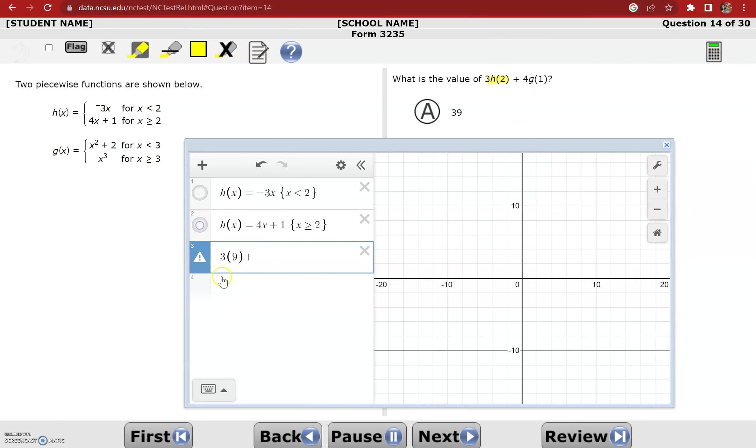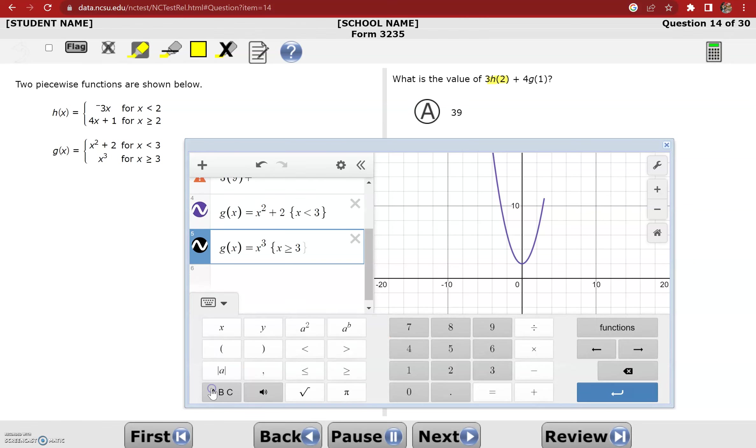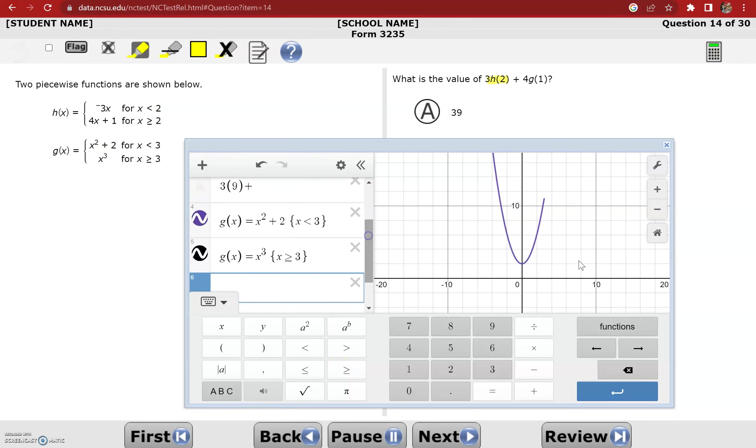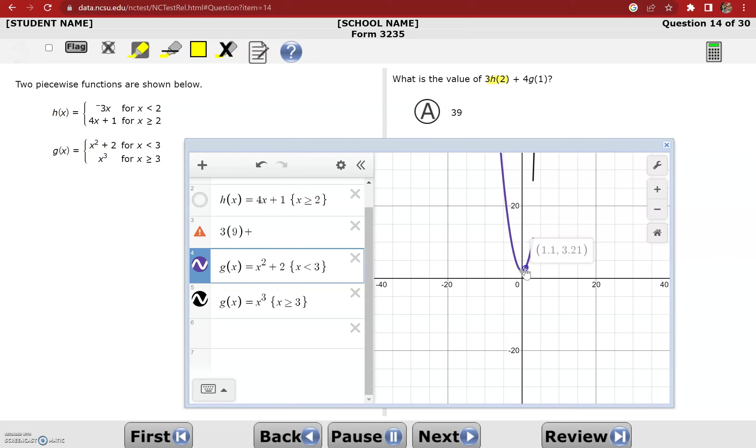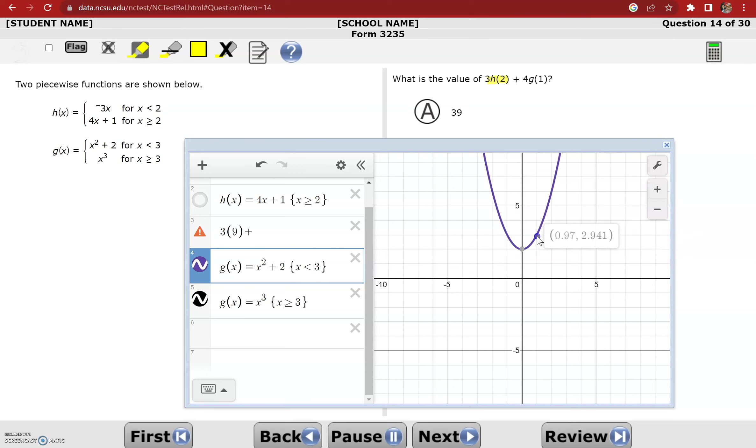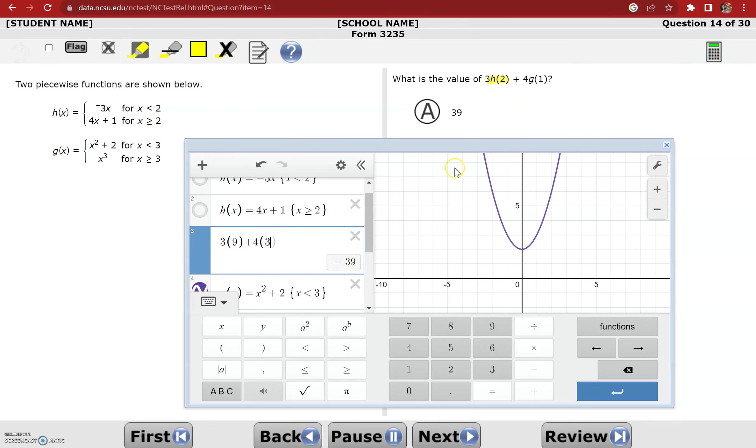And I'm going to hide these because I don't need them anymore. And I'll go ahead and graph g of x down here. So I've got x squared plus 2 when x is less than 3, and then I've got x cubed when x is greater than or equal to 3. And when you want to type greater than or equal to you just type greater than and then the equal to button, Desmos automatically formats it. Or you can find it on the keypad there. So now I have my g of x function graphed and I want to find g of 1. I can zoom out to see what the full function looks like. But g of 1 right down here. I need to hit the house button so I can get a little more precise. It is going to be 1 comma 3. So 4 times g of 1, 4 times 3, and I get an answer of 39.